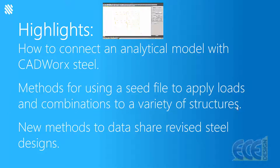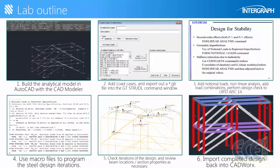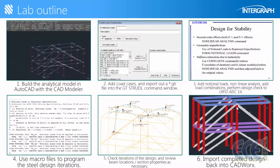As an outline, these are the things users will accomplish during the session: we build a model, we add load cases, we add notional loads, we apply nonlinear analyses for second order effects, and we show and apply a macro file — that seed file I mentioned — which will iterate our steel design to check the code and select the members we want. I'm going to explain during the session how I set this up, and then we'll review results and import the revised design back into CADWorks so we can run a bill of materials command and get the new sizes on all the members.